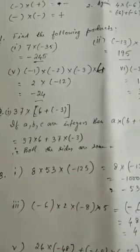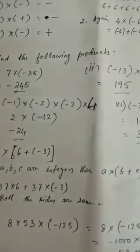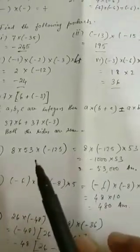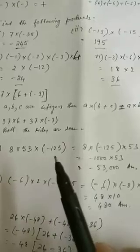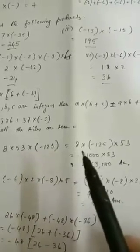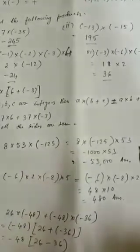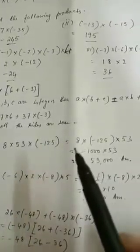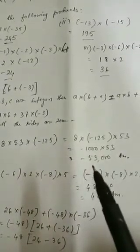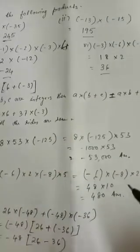Next, sum number 3. Follow the question in your book: using suitable properties, evaluate the following. The first sum: 8 into 53 into minus 125. You can change the position here. So, 8 into bracket minus 125 into 53. If you multiply the first two numbers, you get minus 1000 into 53 is equal to minus 53,000. This is your answer.